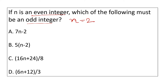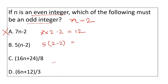Now with value 2, we look at which option gives an odd integer. For option: 7 into 2 minus 2 equals 14 minus 2 equals 12. Another option: 5 into 2 minus 2 equals 0. Third option: 16 into 2 plus 24 divided by 8 equals 7. Since 7 is an odd integer, the answer is C.